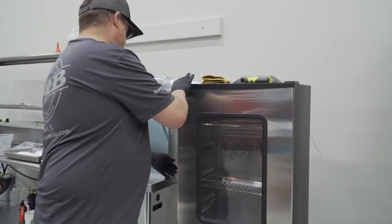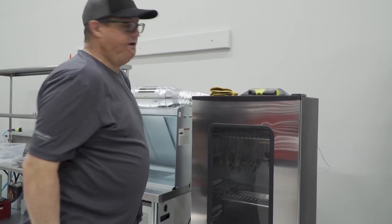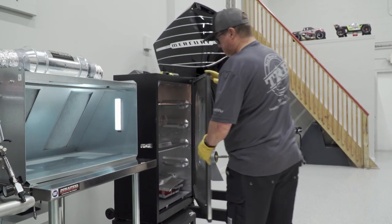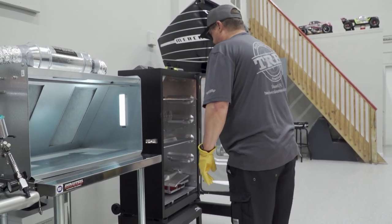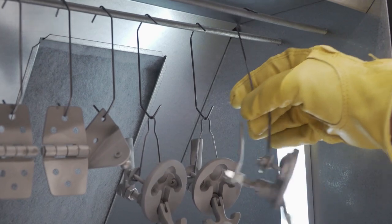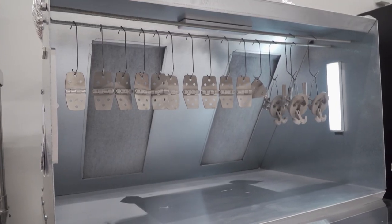By baking it off, it allows some of the stuff to evaporate, especially the chemicals. Once we've done the initial bake, we inspect everything. It is then put into the spray booth to get ready for the Cerakote process.